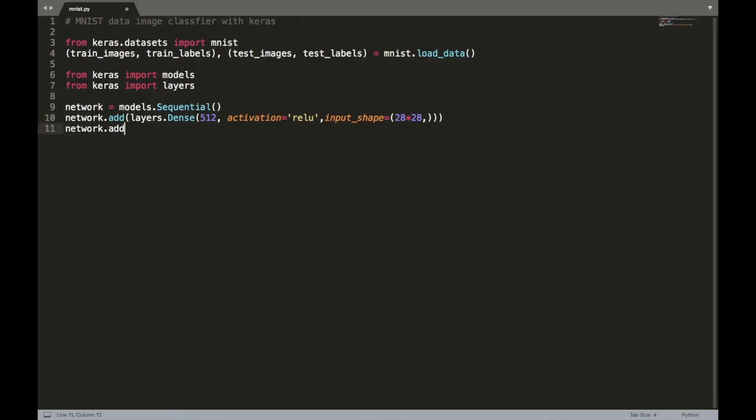The output layer has 10 nodes which uses Softmax as the activation function. Next, we compile our network by providing three key parameters: the optimizer, the loss function and the metrics that we will monitor.